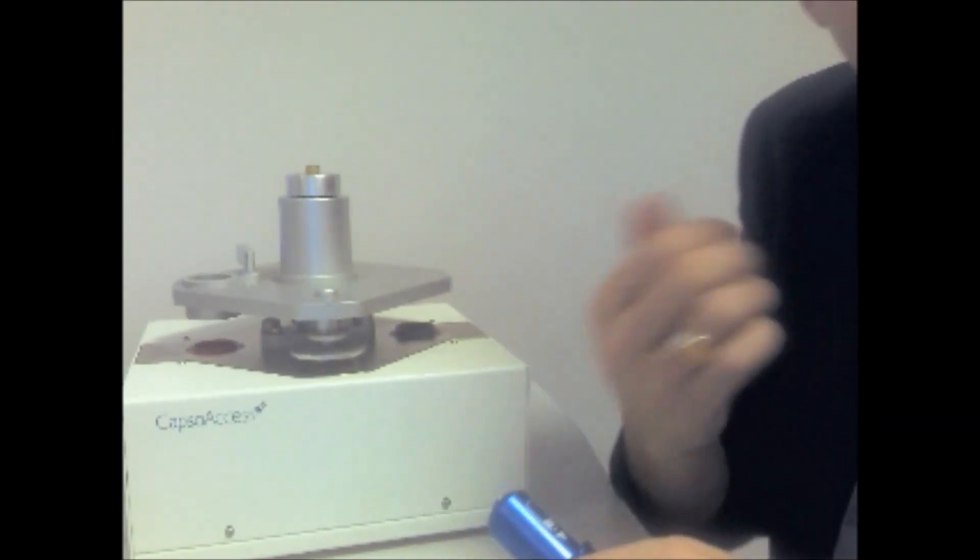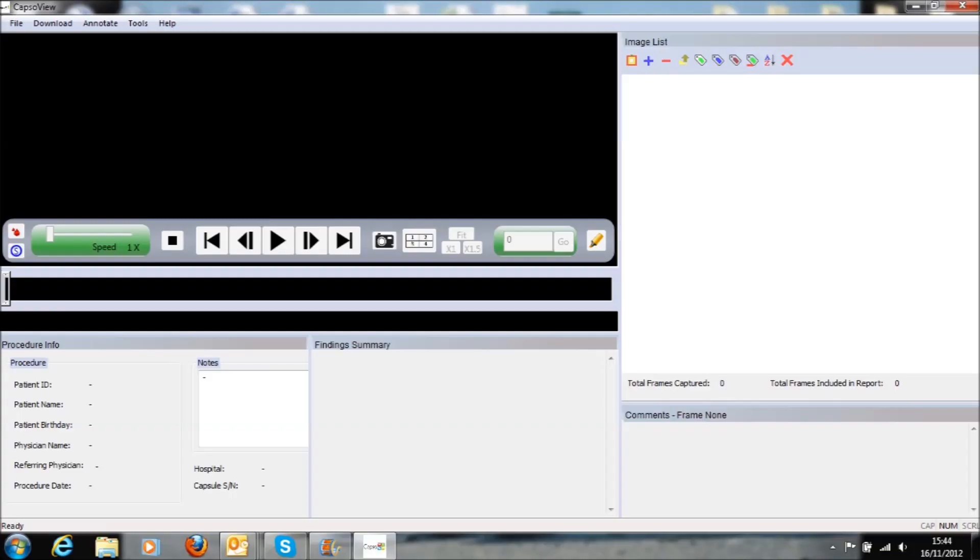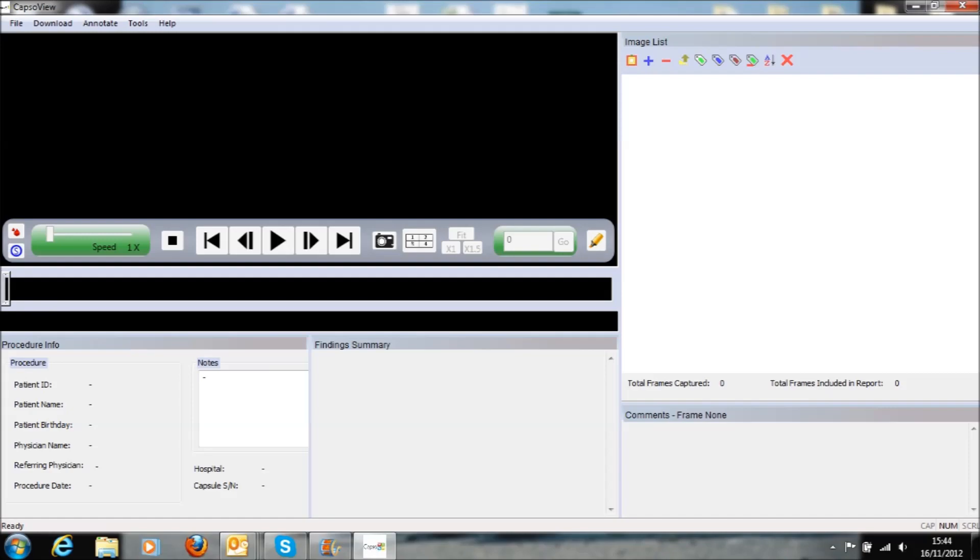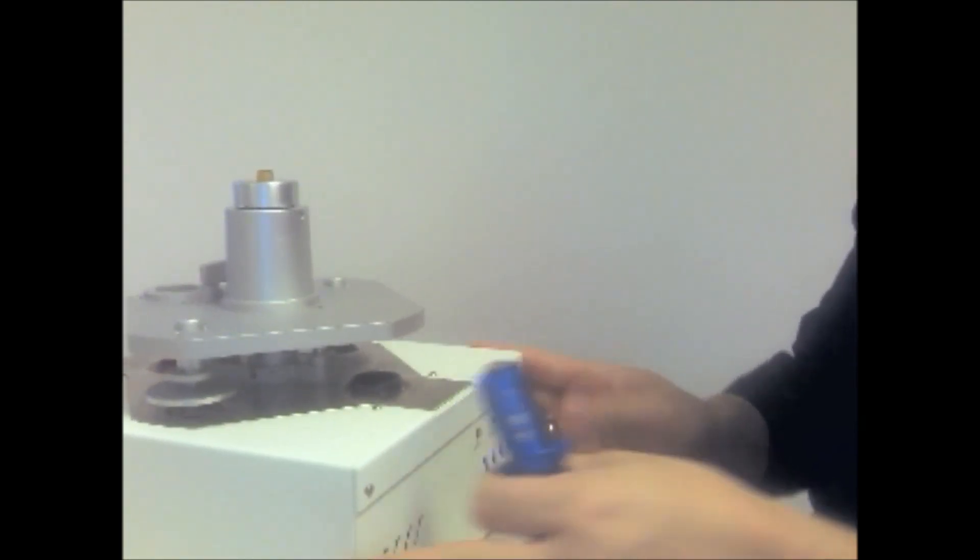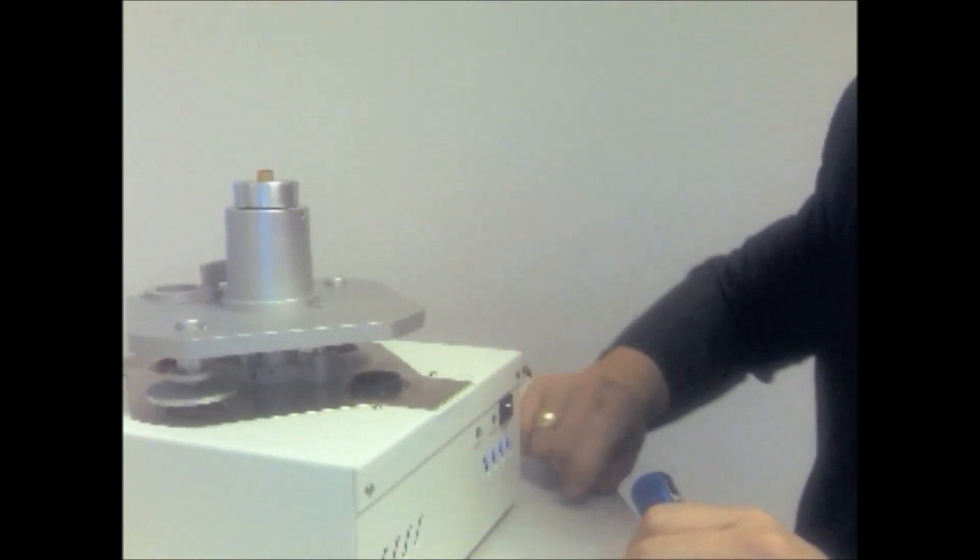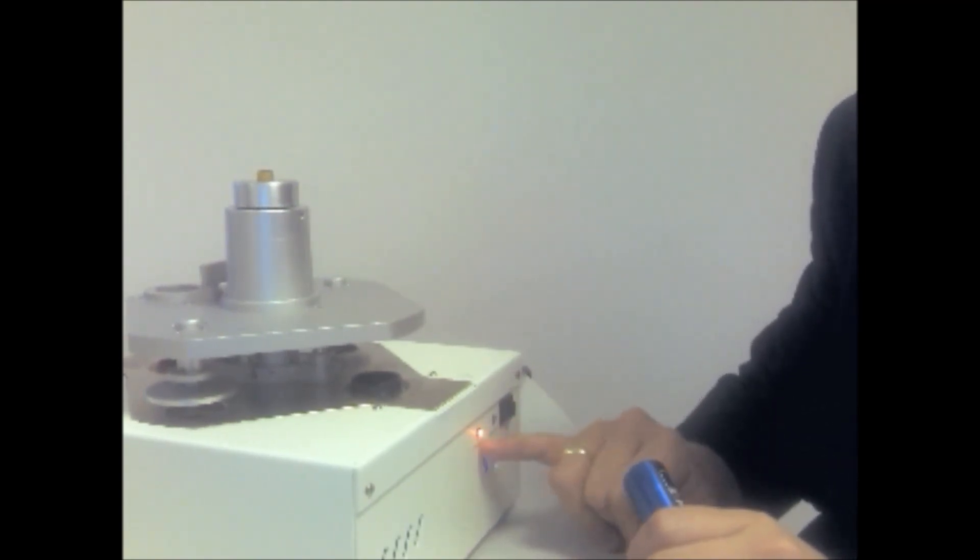The first thing to do is to load the software up on your PC and then make sure that you've switched the unit on, which is controlled via this green switch on the front. You should then get a status one orange light appear on the unit.